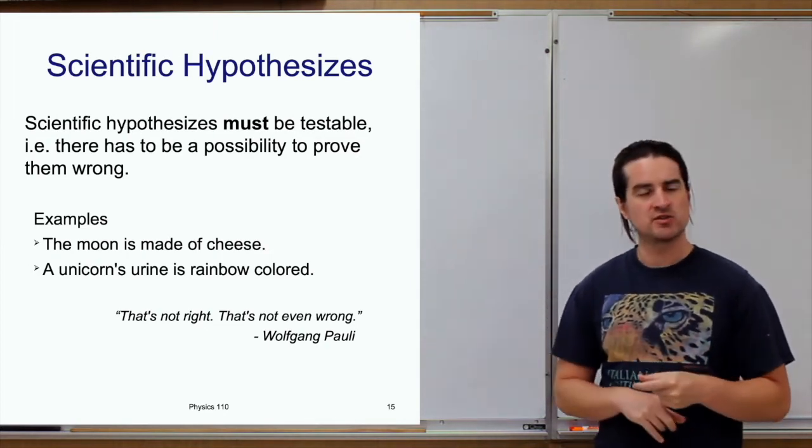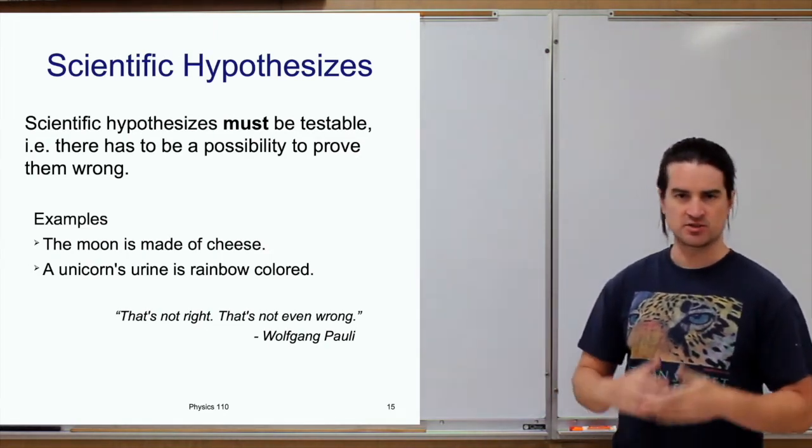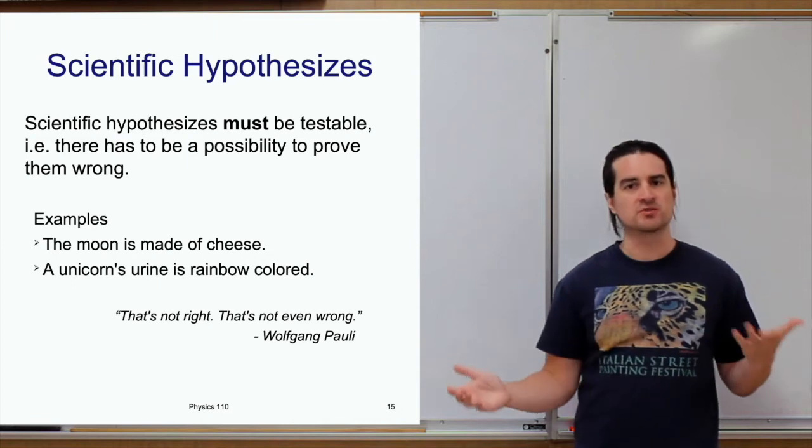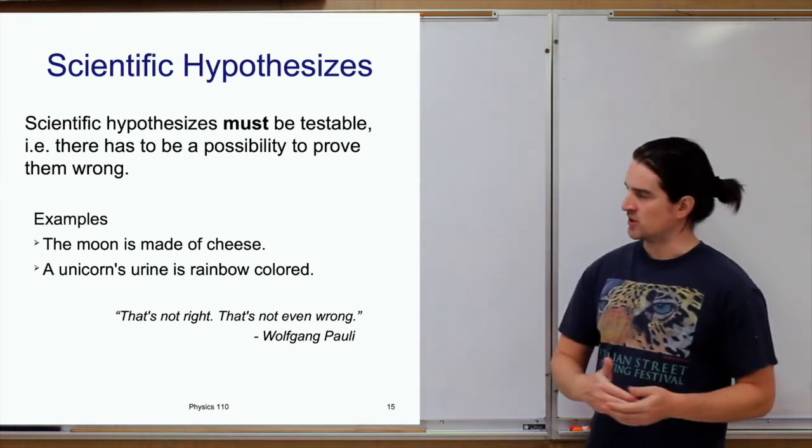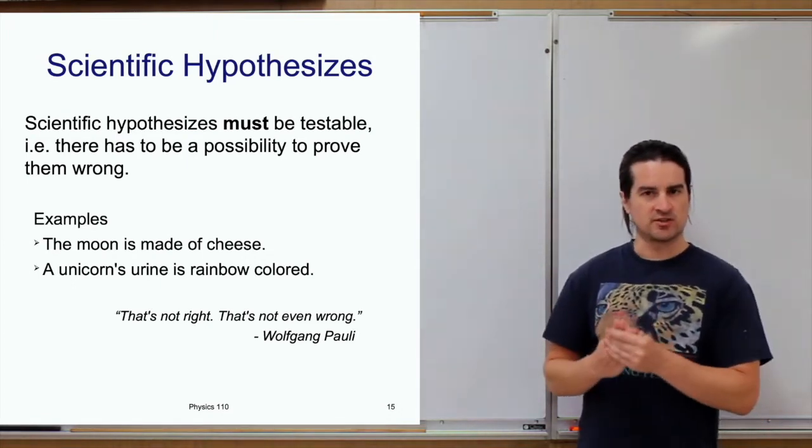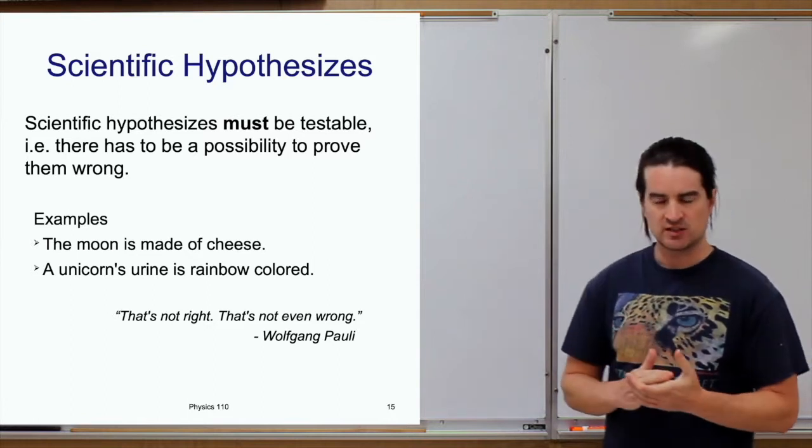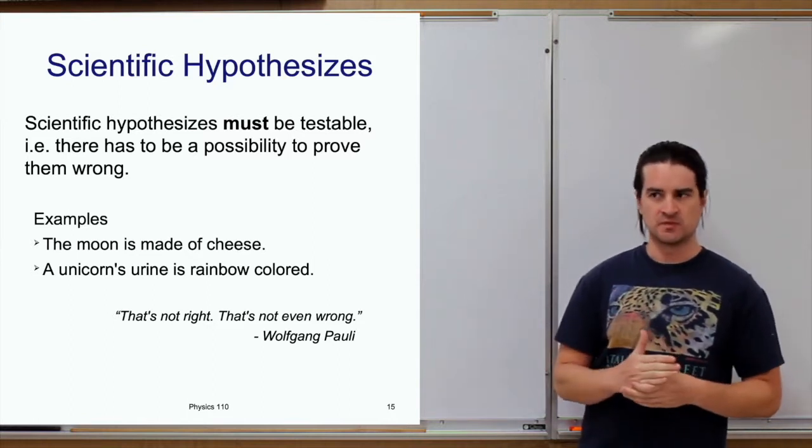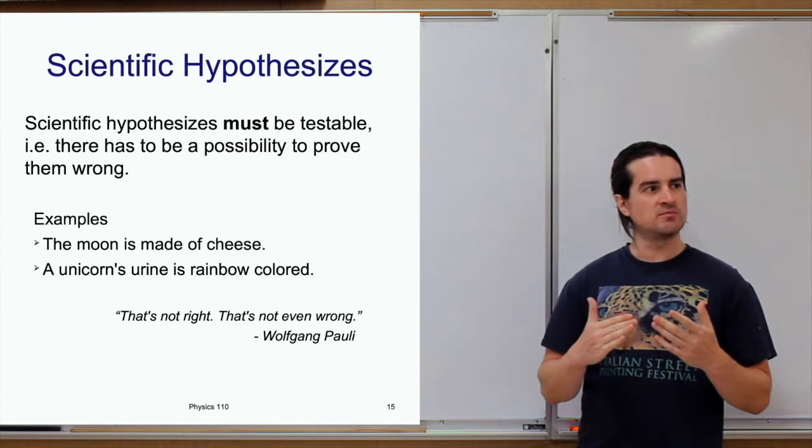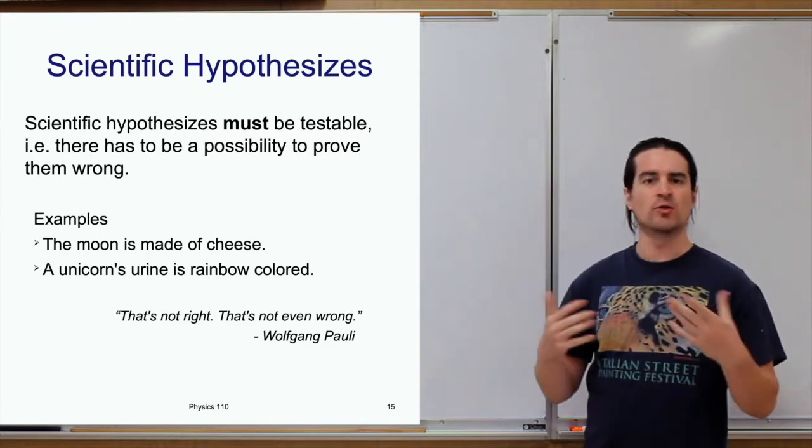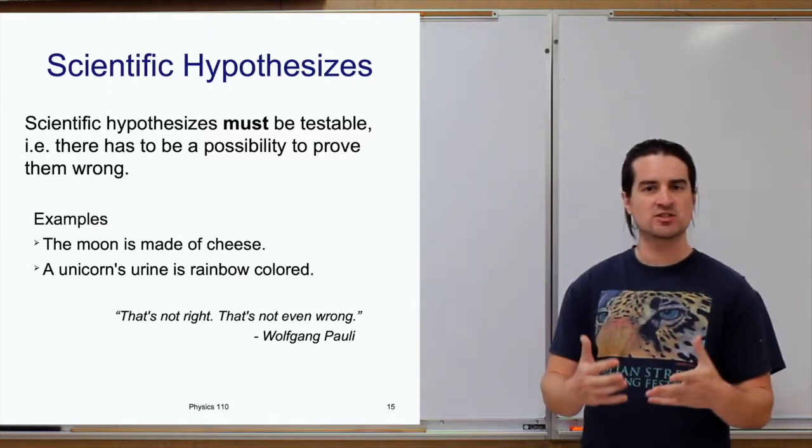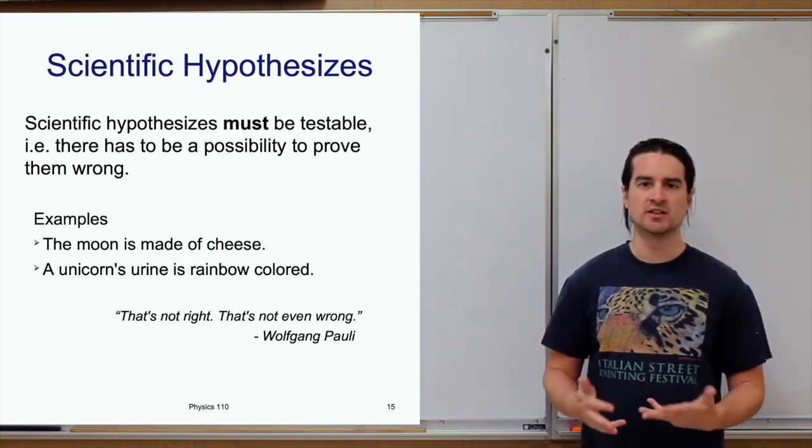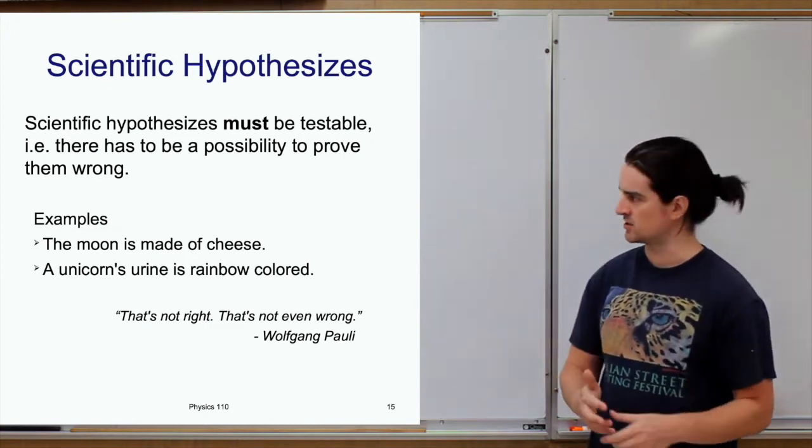One of the most important things about a hypothesis, right? This is your educated guess as to why something is the way it is. One of the most important things, and a crucial thing, a necessary thing for it to be scientific, is that it must be testable. Meaning, there needs to be a way to prove it wrong. Even though that test might fail and it's still shown to be correct, there has to be at least a way to test it.